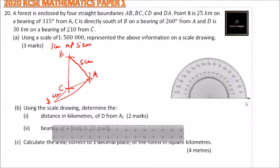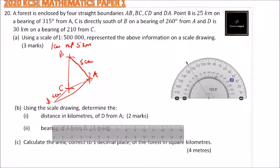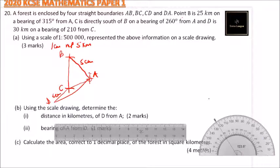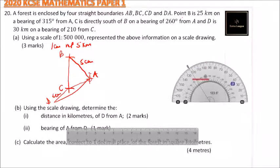We have a ruler and a protractor here. We start by making a reference line using the ruler, then mark where we want our diagram to start. This is our point A. We can now measure the required angle from this point.